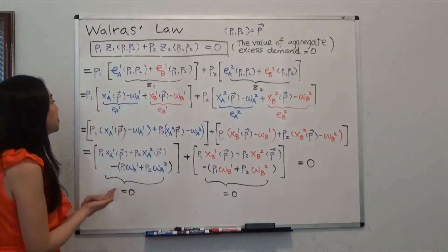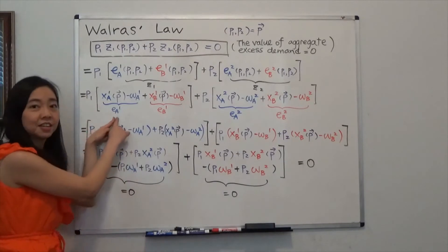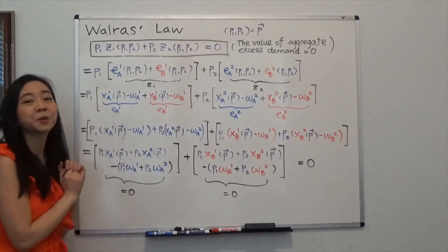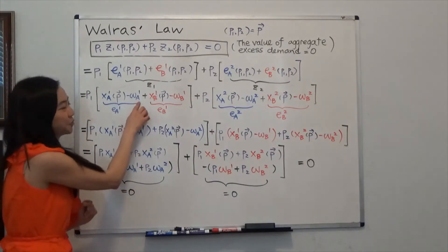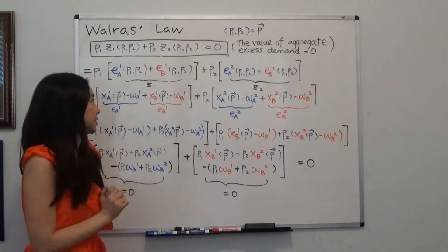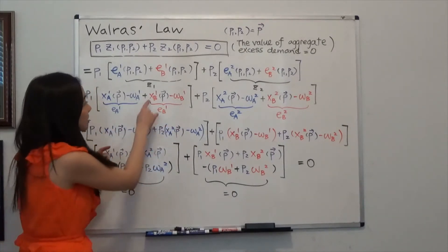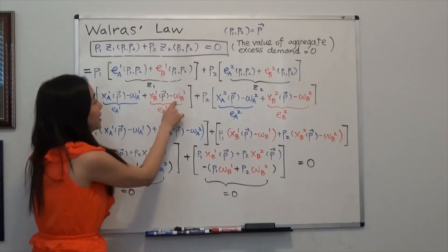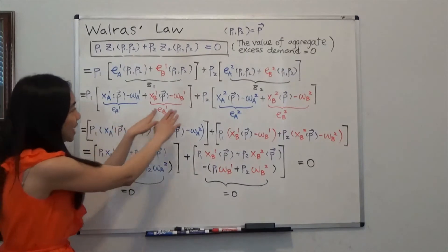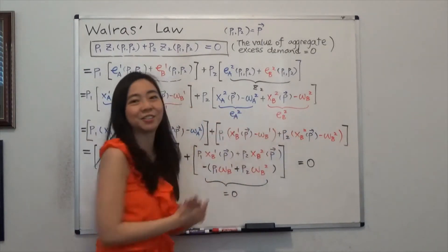We also know that excess demand for good one from Alice is equal to her consumption for good one minus her endowment for good one. And the same thing for Bob: excess demand for good one from Bob is equal to his consumption of good one minus his initial endowment. And I'm doing the same thing for good two — just breaking it down. I didn't change anything.